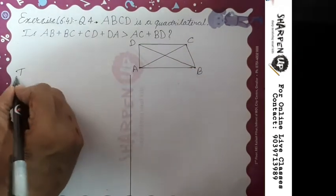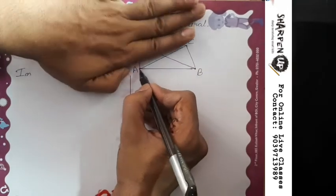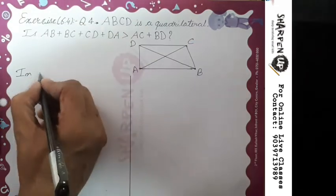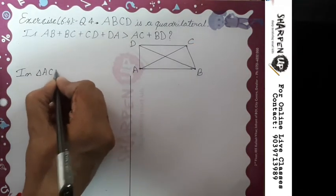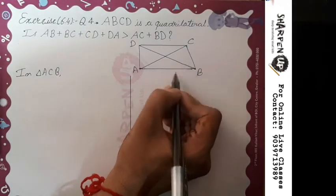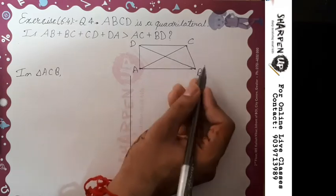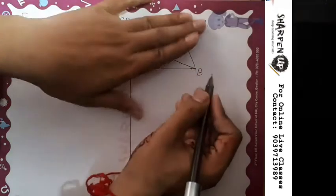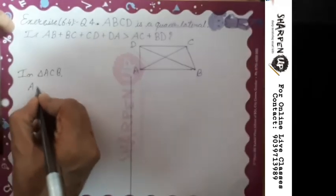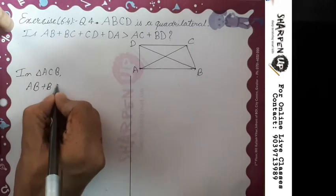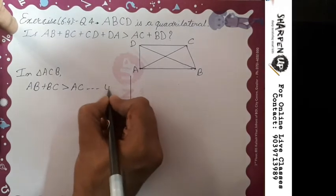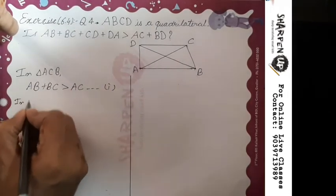First, taking A as a vertex and hiding the upper part, we get triangle ACB. We use triangle inequality: the sum of two sides is always greater than the third side. So AB plus BC is greater than AC. Let's name this expression one.